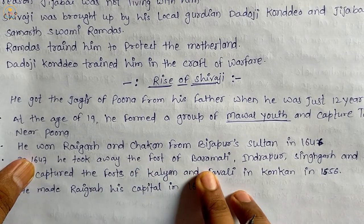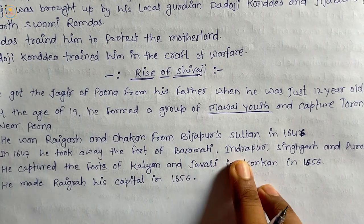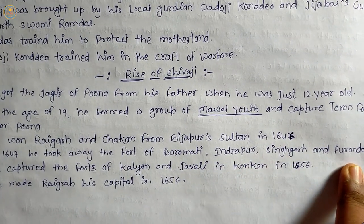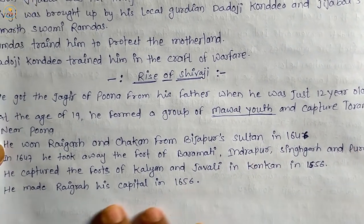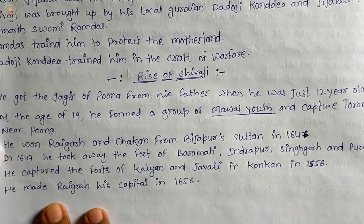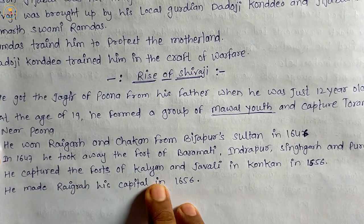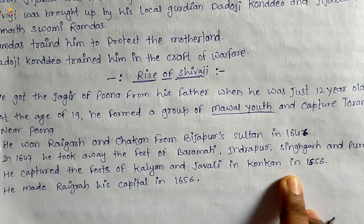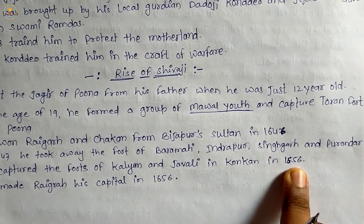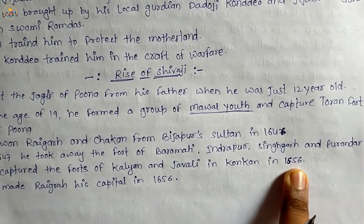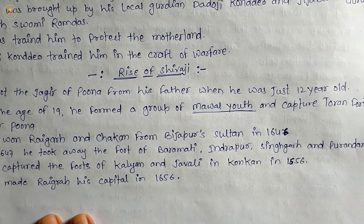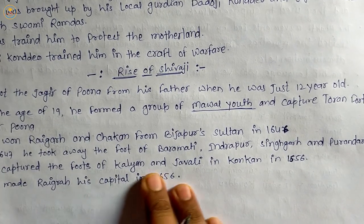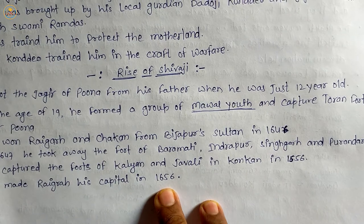In 1647, he took away the forts of Baramati, Indrapur, Sinhagad, and Purandar. He captured the forts of Kalyan and Jawali in Konkan in 1656, and he made Raigad his capital in 1656.